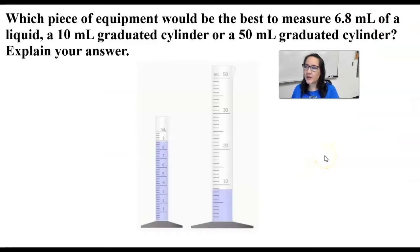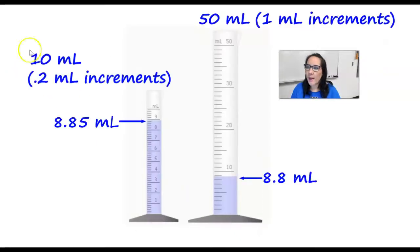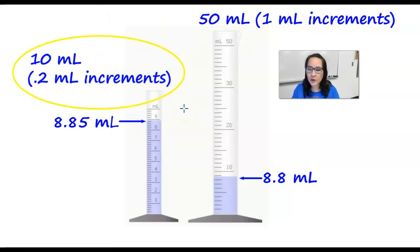Which piece of equipment would be best to measure 6.8 milliliters of a liquid — a 10-milliliter graduated cylinder or a 50-milliliter graduated cylinder? The 10-milliliter graduated cylinder reads in 0.2 milliliter increments, versus the 50-milliliter graduated cylinder which reads in 1-milliliter increments. So clearly the 10-milliliter cylinder is the more accurate measuring device.